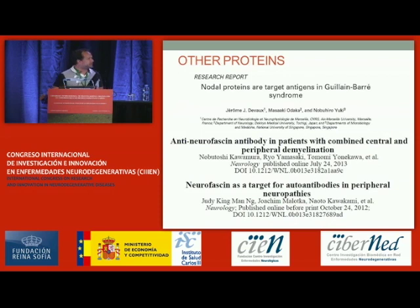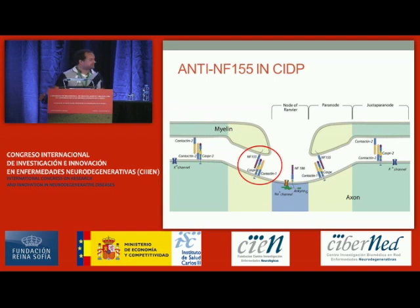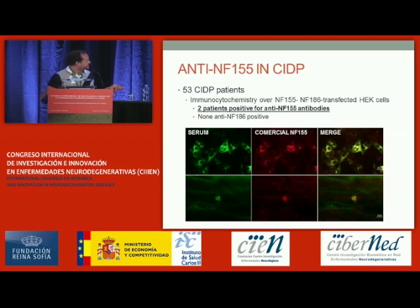Simultaneously with our study, other studies were published describing neurofascin as an antigen in this type of neuropathy. Neurofascin has two isoforms: one in the node that clusters sodium channels, and another isoform in the Schwann cell that binds to contactin-1 and Caspr. We checked if any of our patients had autoantibodies against neurofascin using immunocytochemistry with neurofascin-155 and neurofascin-186. We found two patients positive for anti-neurofascin-155 antibodies, none for the other isoform. These were the patients who had reacted against the paranode but not against hippocampal neurons.